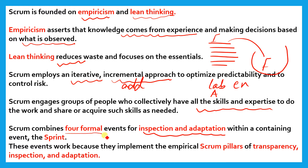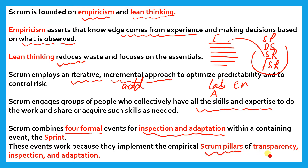These four formal events are for inspection and adaptation. Let me explain quickly: what are the four formal events? Formal means we have to follow them — we cannot escape. The first is Sprint Planning, then Daily Scrum, the third is Sprint Review, and the fourth is Sprint Retrospective. These events work because they implement the empirical Scrum pillars of transparency, inspection, and adaptation.